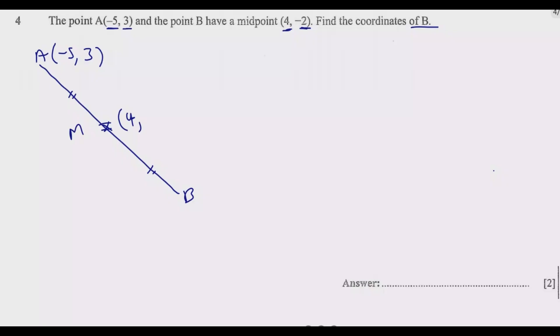So this point which we shall call M, the midpoint, is four comma negative two. The question is asking us to find this coordinate X and Y.